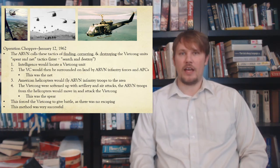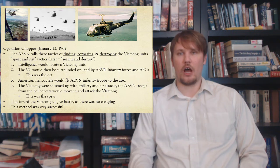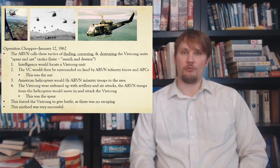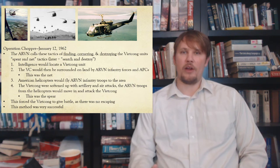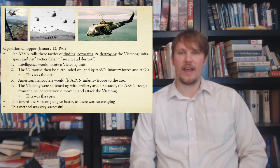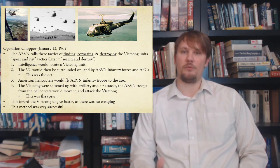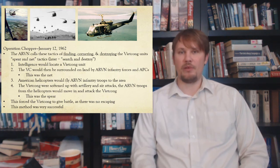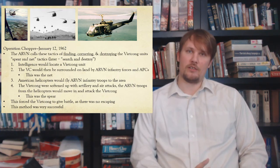Here's how search-and-destroy worked: Allied intelligence would locate Viet Cong guerrillas; ARVN forces, armored personnel carriers, and sometimes patrol boats would surround them — the net. American choppers would fly ARVN infantry to the area, and after the Viet Cong were softened up with artillery and air attacks, those soldiers would move in and attack — the spear. This forced the Viet Cong to give battle with no escape, and the method was very successful for a while. But the Viet Cong learned to change tactics.